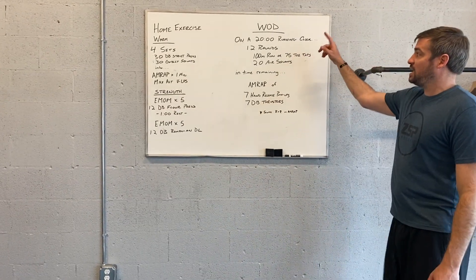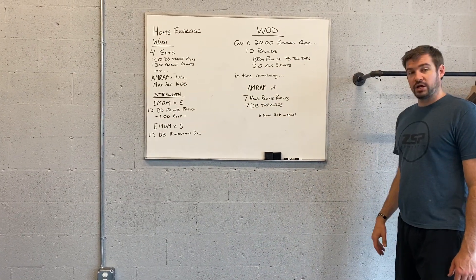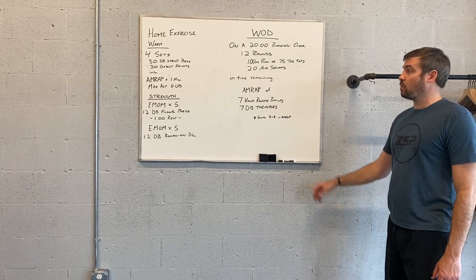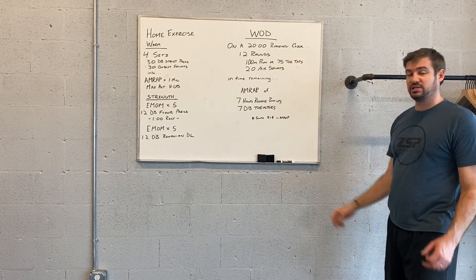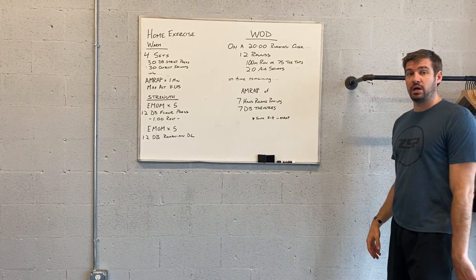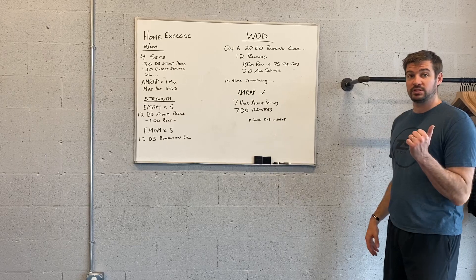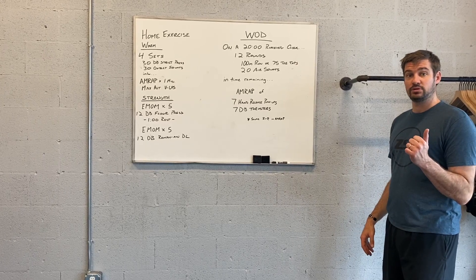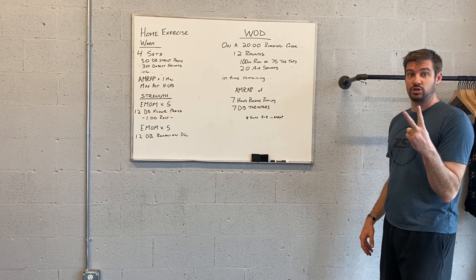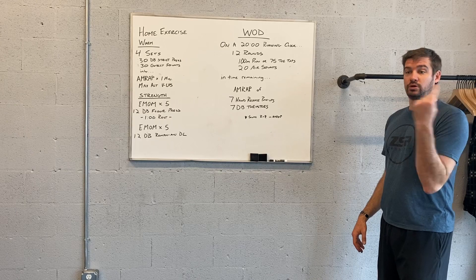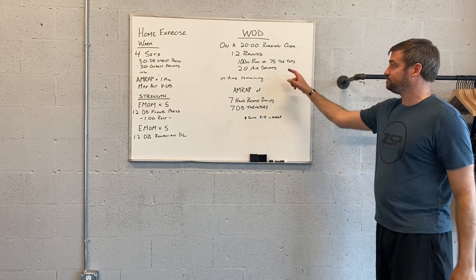The workout of the day is a 20 minute running clock workout where you complete 12 rounds of a 100 meter run and 10 shuttle sprints of 10 meters — so 10 meters down, 10 meters back, that'd be two. You do that five down and backs.